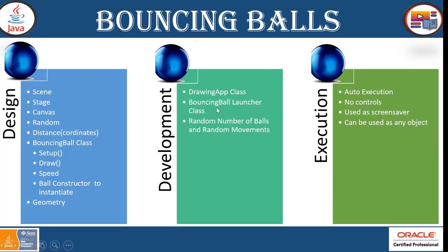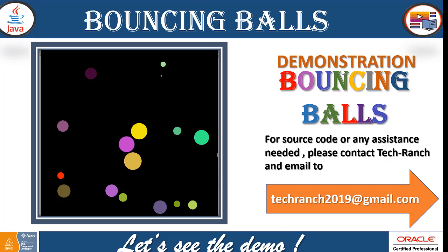When it comes to development, all we need is a main class and a drawing app class which implements all the design objects. Random number of balls with random movements — that is already implemented as discussed. When it comes to execution, it is just auto-execution, no controls. It can be used as a screensaver, an e-greeting, or with any object. Now let's take a look at the execution.